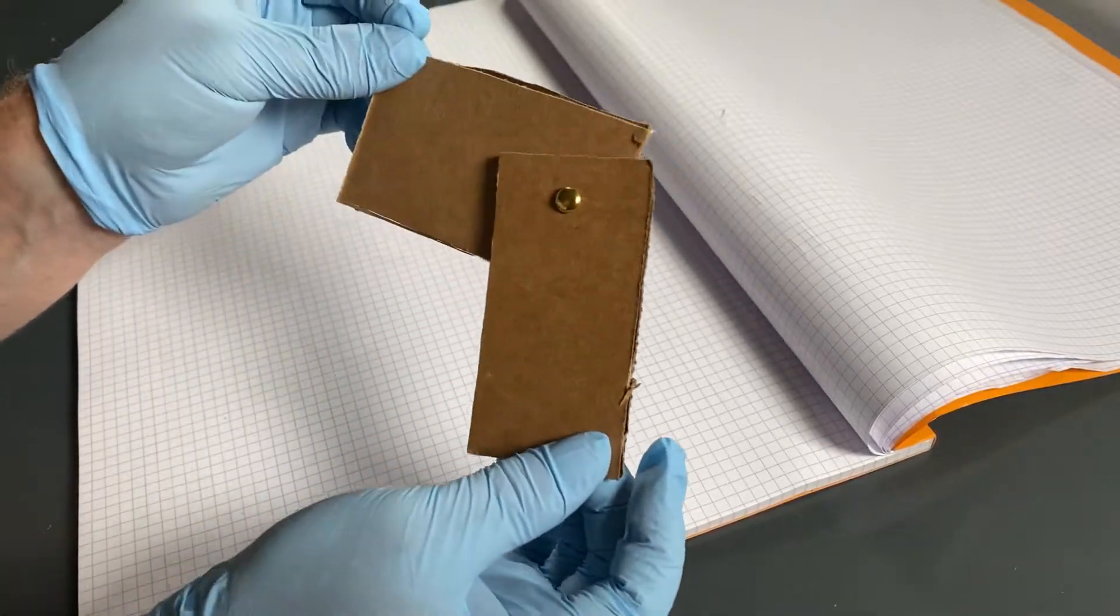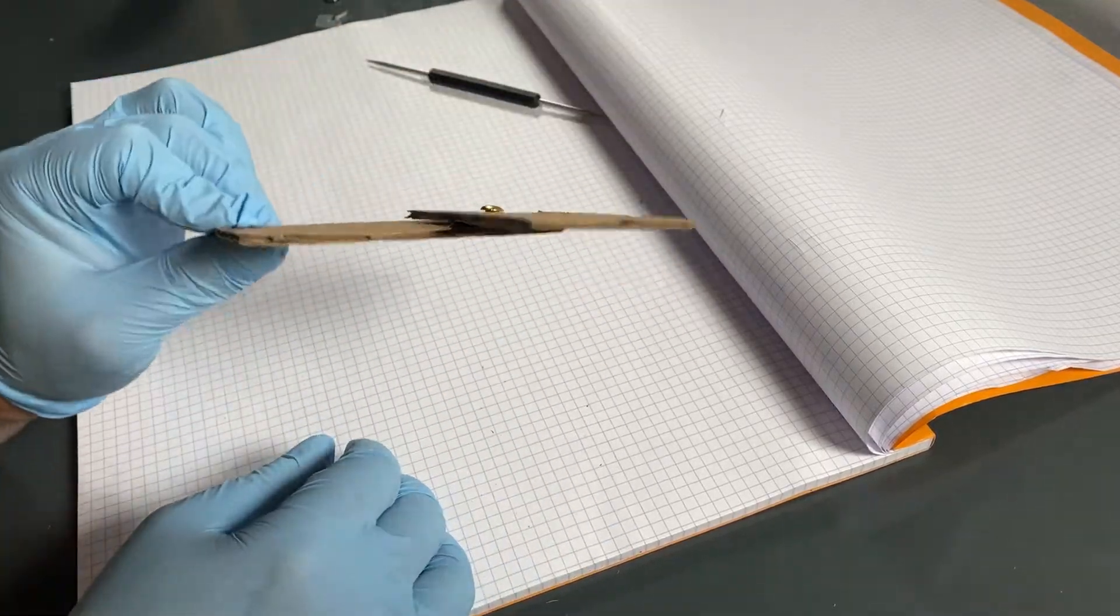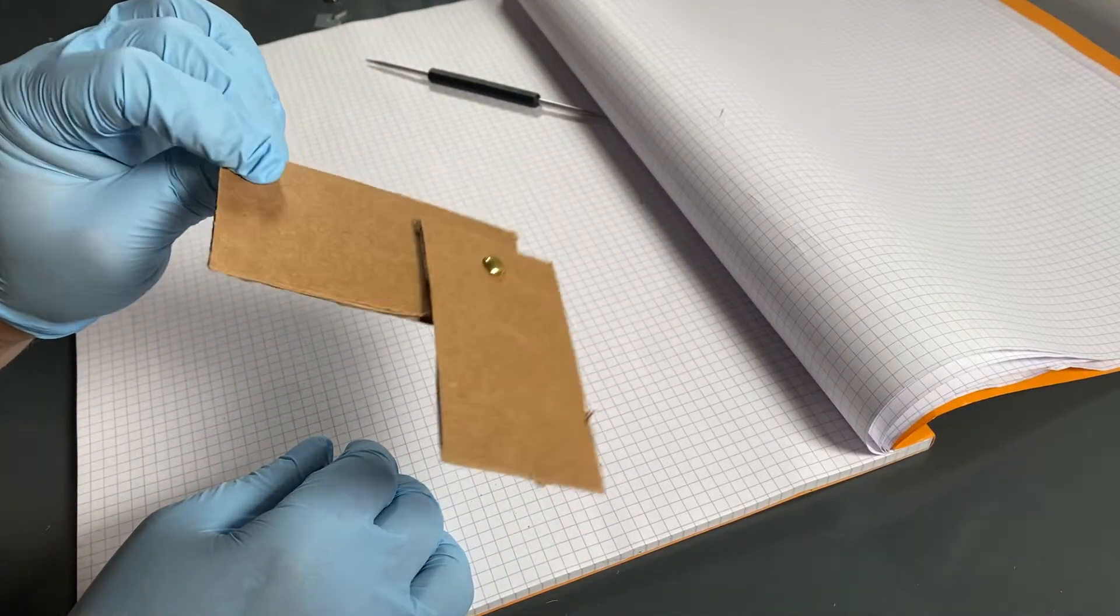Voila. You have a nice moving joint and another way to fasten cardboard without adhesive.